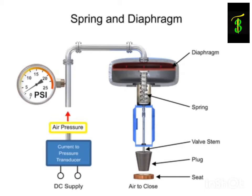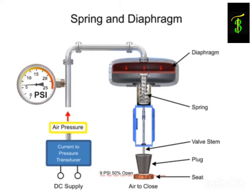For example, a pressure of 9 psi applied to the diaphragm moves the spring and valve stem to 50% of operating range.